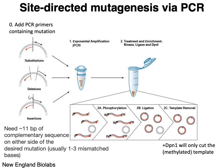After a few rounds of PCR and some template removal using something like DPN1, which will only cut the original template and not your PCR copies, you'll end up with a population where that mutation has been introduced where the primer was.